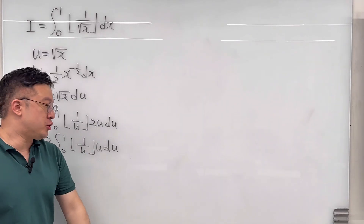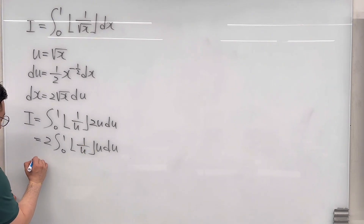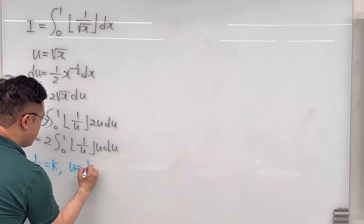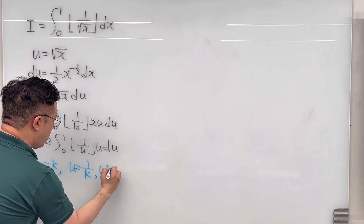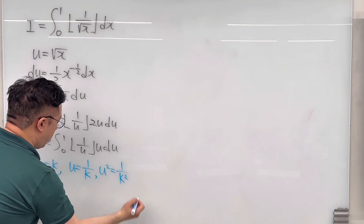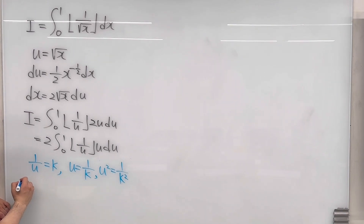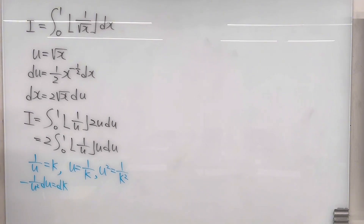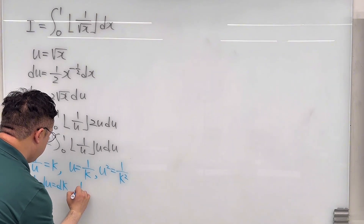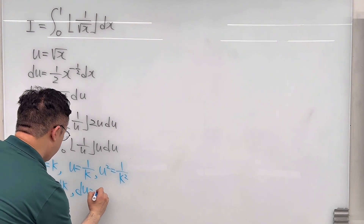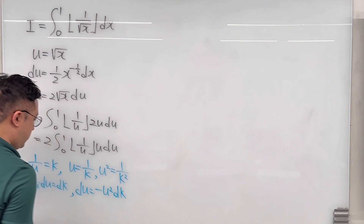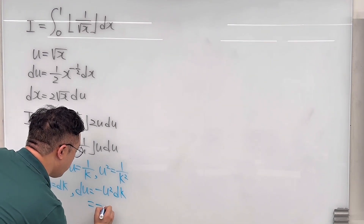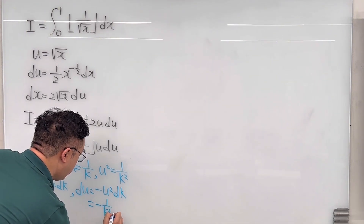Then we can make another substitution. Let me call 1 over u equal to k. That means u has to be 1 over k, and u squared is 1 over k squared. Taking the derivative, it has to be negative 1 over u squared du equals dk. So du has to be negative u squared dk, which equals negative 1 over k squared dk.